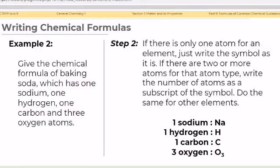Step 2: If there is only one atom for an element, just write the symbol as it is. If there are two or more atoms for that atom type, write the number of atoms as a subscript of the symbol. Do the same for other elements. There are one sodium, so we will write the symbol as Na, and H for hydrogen, and C for carbon, and O for oxygen.